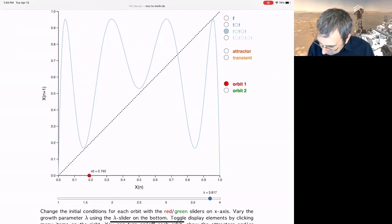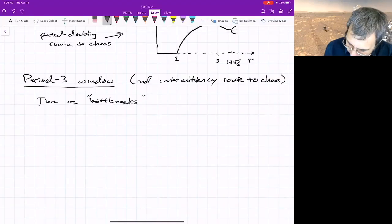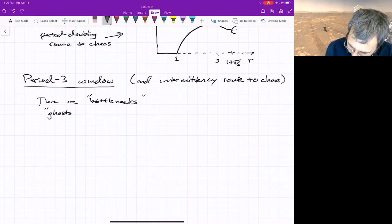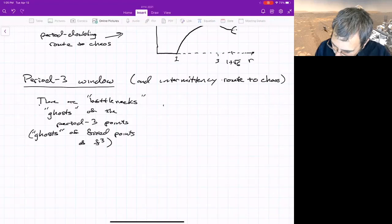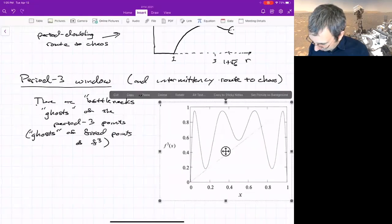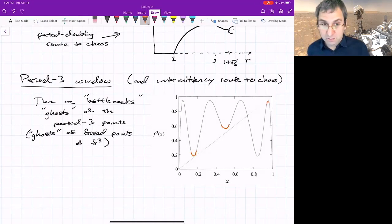Things get stuck really close to those tangency points. They're bottlenecks, just like the ghosts. They're ghosts of the period three points, ghosts of fixed points of the third iterate of the map. Let me show a figure. This is showing the map right before that tangency, where these parts that are locally looking like parabolas are about to intersect the 45 degree line. What's going to happen? Some initial condition will go here and just get stuck going through there. You have a bottleneck region.